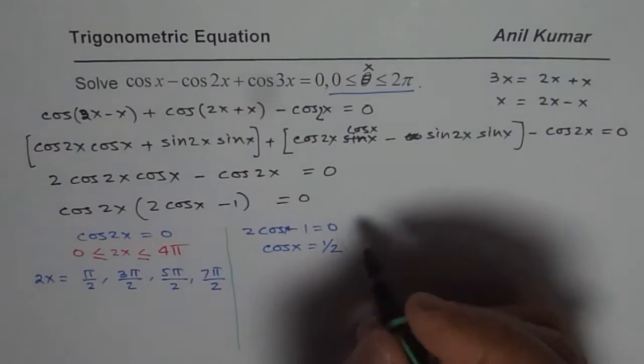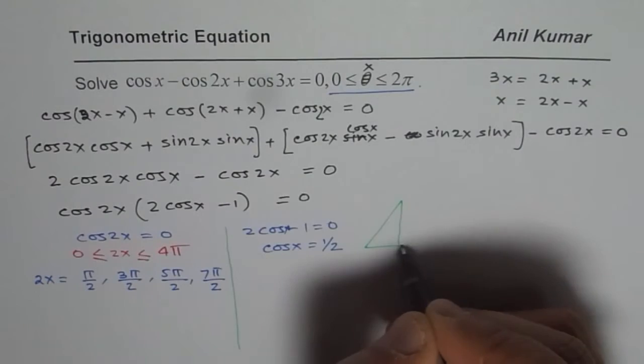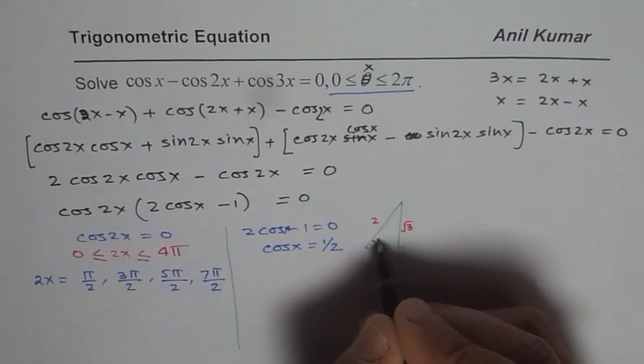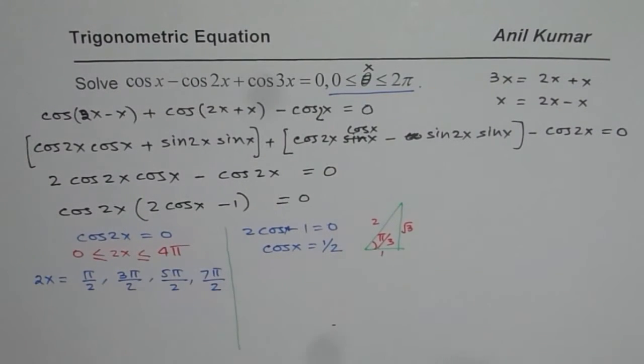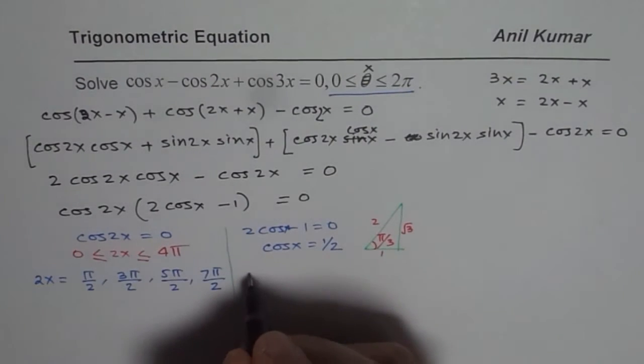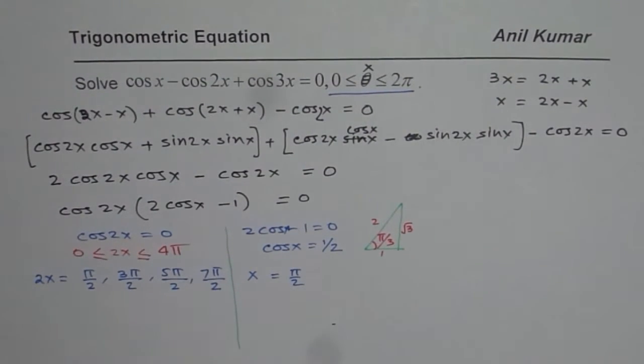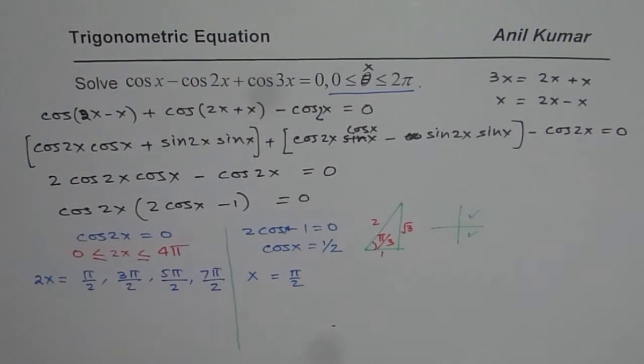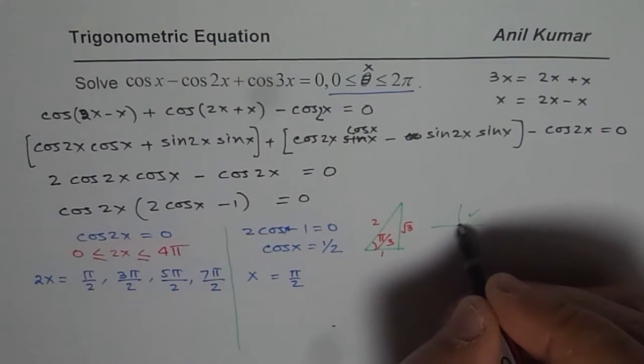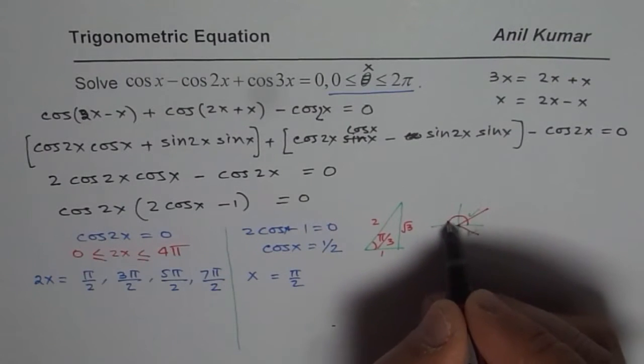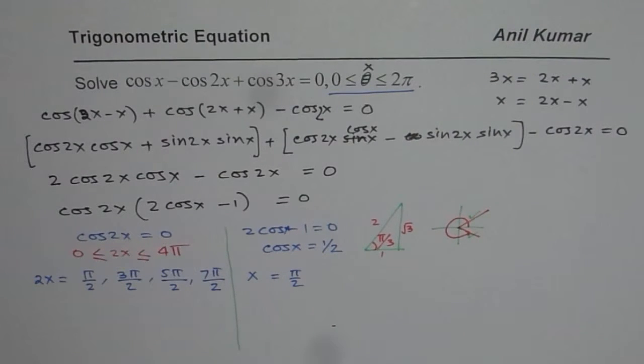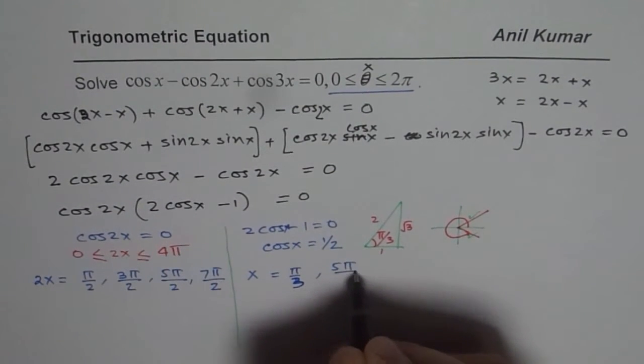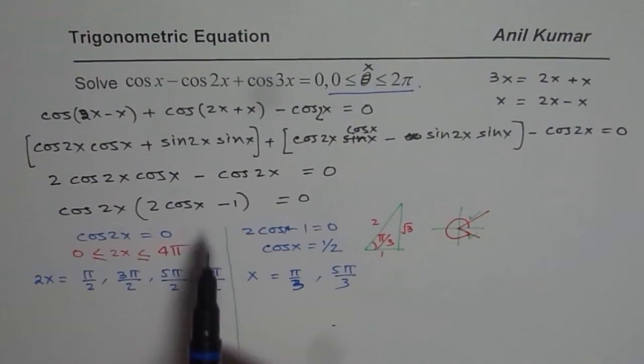Here, cos x is equal to 1/2. You can use the special triangle. In the special triangle, 1 and 2 square root 3, that is for π/3. In this case, you get x equals π/3. And cos x is also 1/2 in quadrant 4. Positive in these two quadrants. So that means π/3 here. The acute angle is π/3. So we get π/3 and 5π/3. Those are the solutions from the second factor.